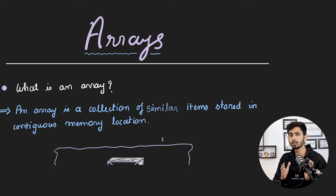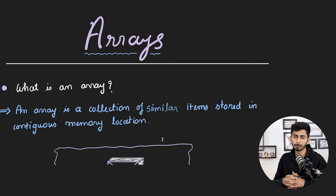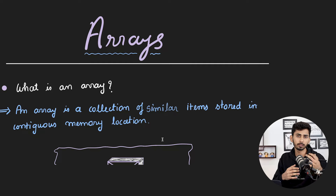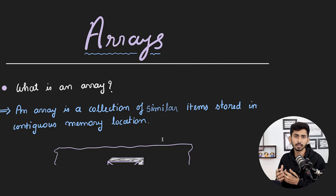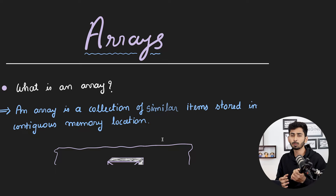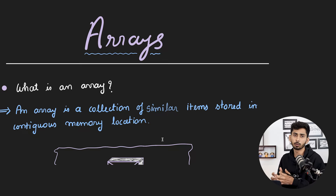You can think of an array as a row of boxes where each and every box is capable of storing some element. If you are storing an element of type integer in box number one, then all the boxes will be capable of storing integer data type elements only. Each box is given some number — the first box goes by the number zero, the next box by one, and so on.